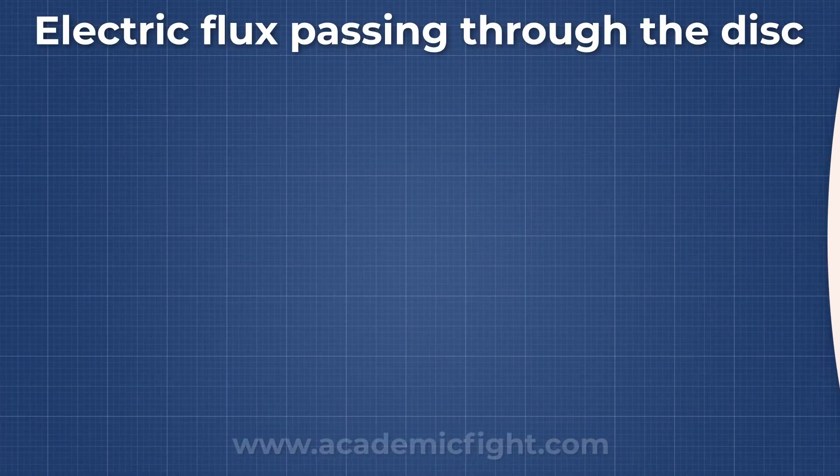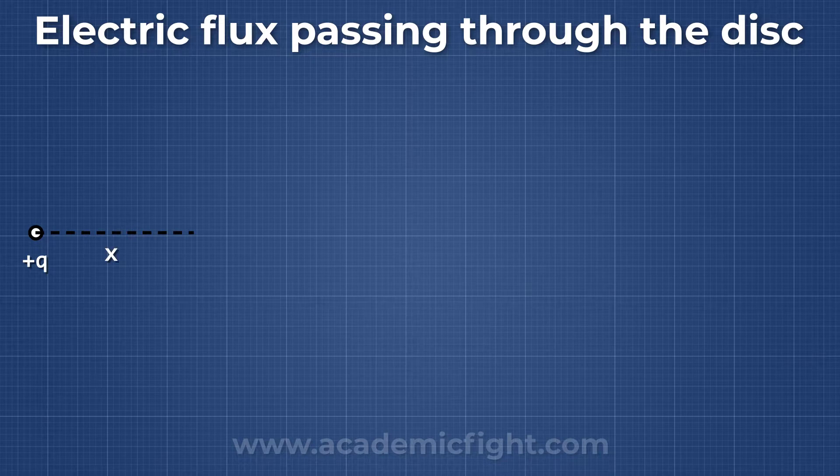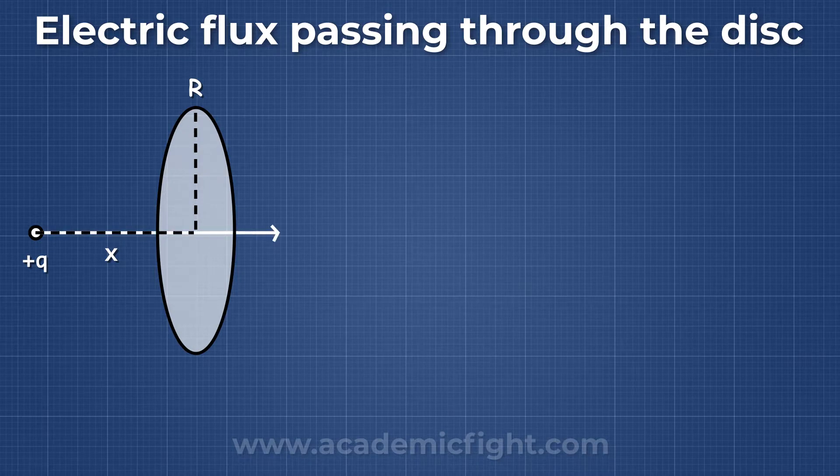So in today's video, we are going to find out how much flux passes through the disc. Let's say we have a charge Q, which is kept at a distance x in front of the disc of radius R. Electric field will come out of this charge and pass through the disc. Let's say a total of the electric field will pass through the disc.